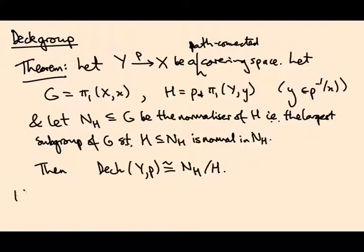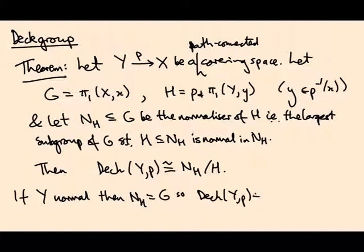Then Deck(Y,p) ≅ Nₕ/H. In particular, if Y is a normal covering space, then H is normal in G, so Nₕ = G. The biggest subgroup of G in which H is normal is the whole of G. So the deck group is what we expected: π₁(X)/p∗π₁(Y).